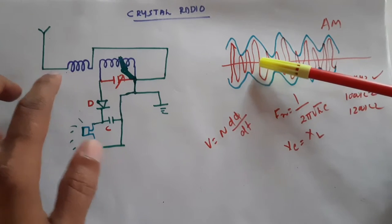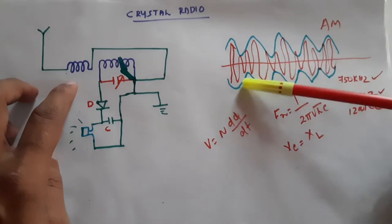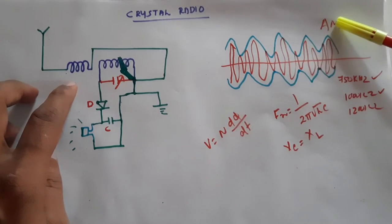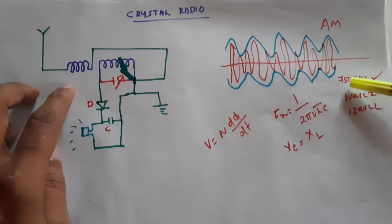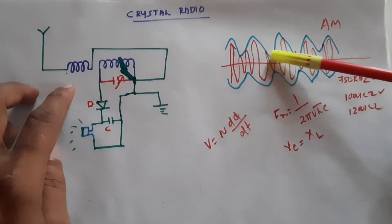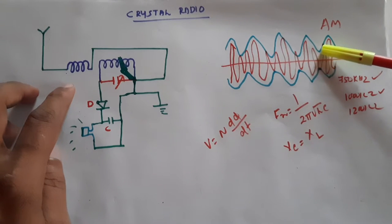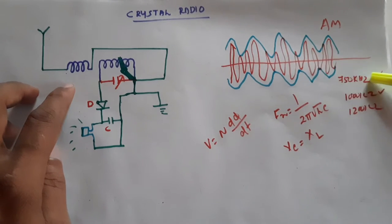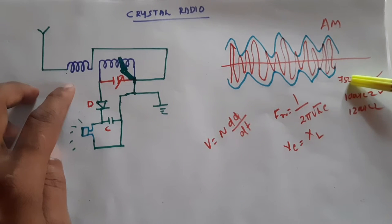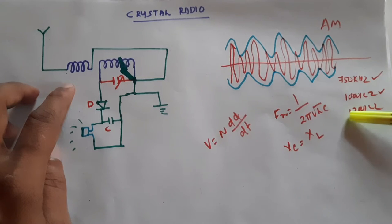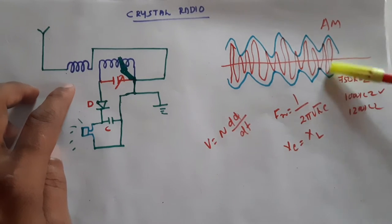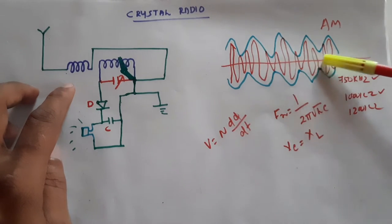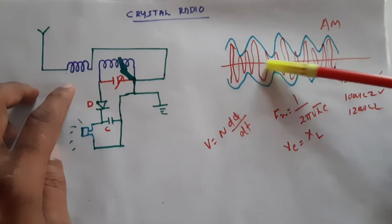This circuit is used to select an amplitude modulated signal. Different radio stations broadcast their signals at different frequencies — for example, 750 kilohertz, 1000 kilohertz, or 1200 kilohertz — and they are all sending their signals simultaneously.